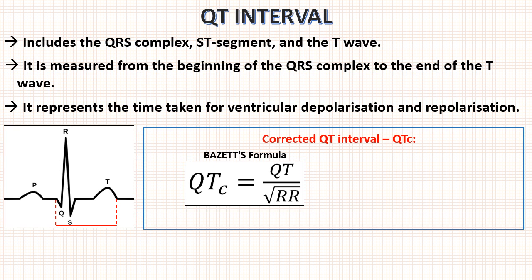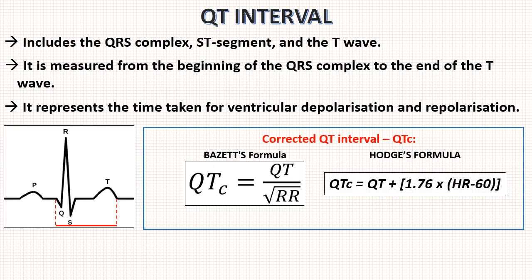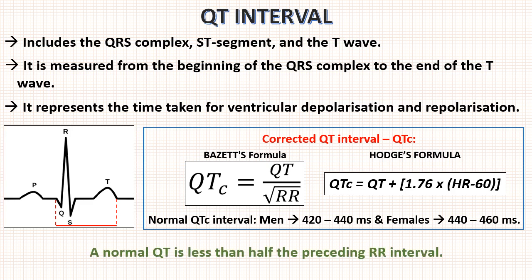But it is difficult to perform as it contains square root function. So, comparatively easy formula is Hodge formula which is QT interval plus 1.76 multiplied by heart rate minus 60. Normal QTc interval for men is from 420 to 440 ms and for females is from 440 to 460 ms. Remember rule of thumb that a normal QT is less than half of preceding RR interval.